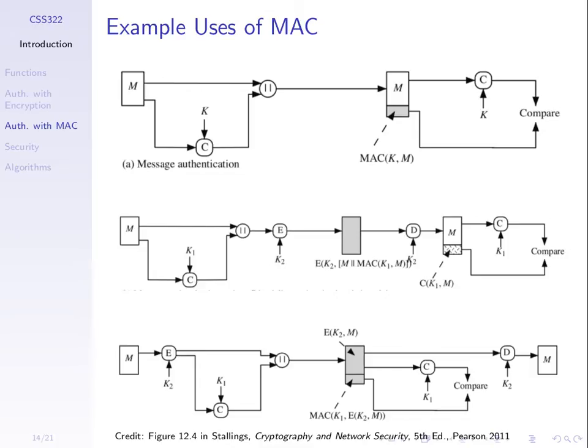The other diagrams here combine the MAC with encryption. In the first case, the data is not encrypted — it's just authenticated. In the other two cases, the data is both encrypted and authenticated. The difference between them is the order in which the MAC and the encryption are applied. In the middle diagram, calculate the MAC and then encrypt. In the bottom diagram, encrypt and then MAC.